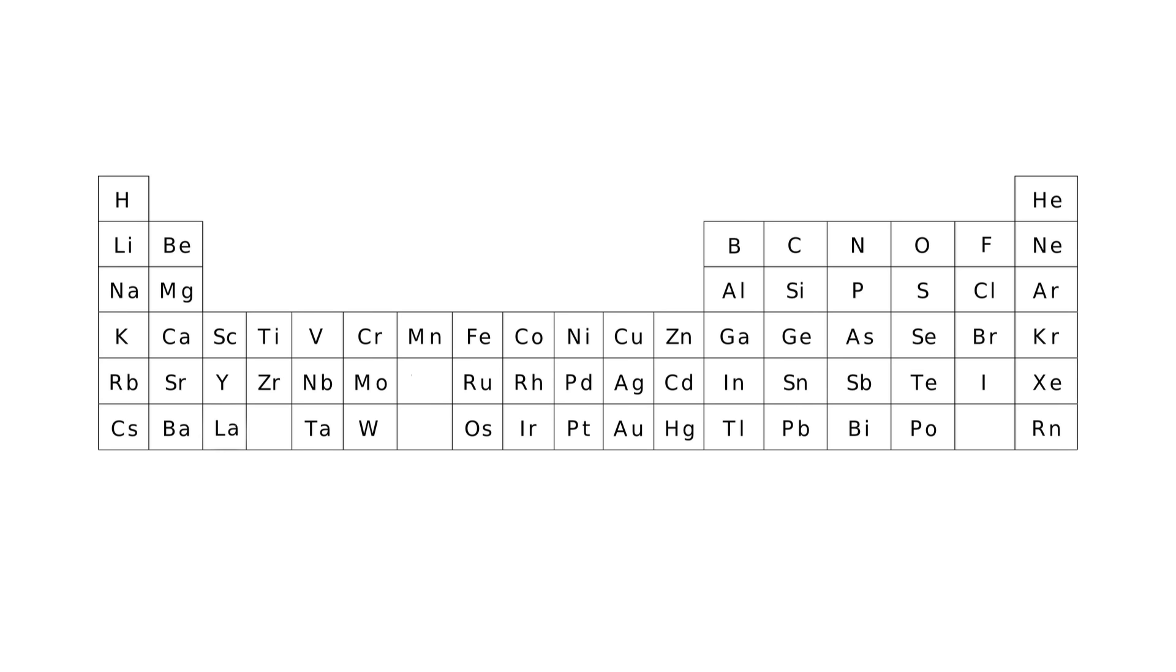He arranged the elements into rows called periods and columns called groups. Elements that had similar behavior were put in groups together which helped to correlate existing data, and it also predicted the existence of elements that had never been seen before.